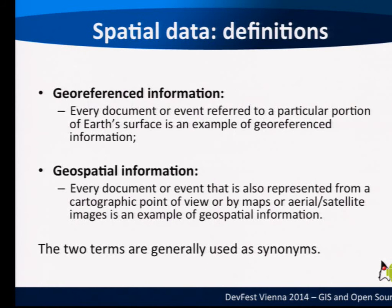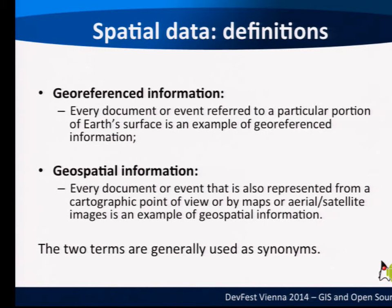Very often in GIS we have these two definitions: georeferenced information and geospatial information. The difference is very subtle and generally they are used as synonyms. Georeferenced information is every document or event referred to a particular portion of the earth's surface. Geospatial information is every document or event that is also represented from a cartographic point of view. So generally you speak about geospatial information in association with a cartographic perspective.